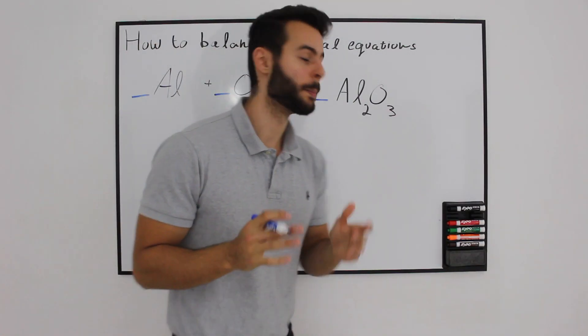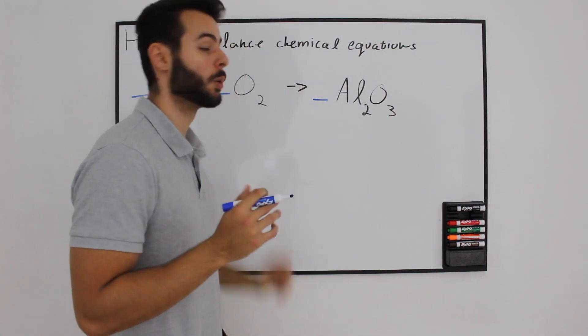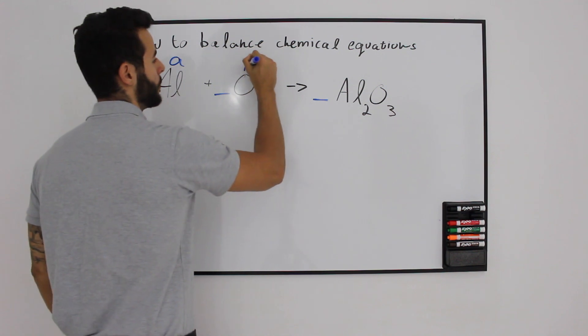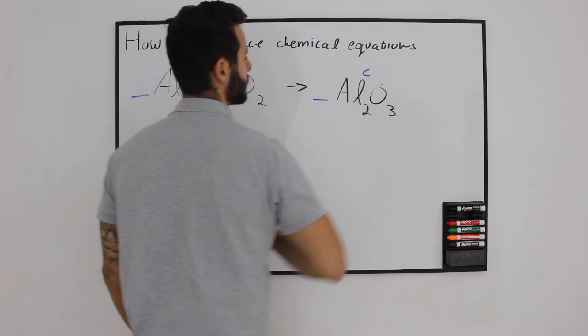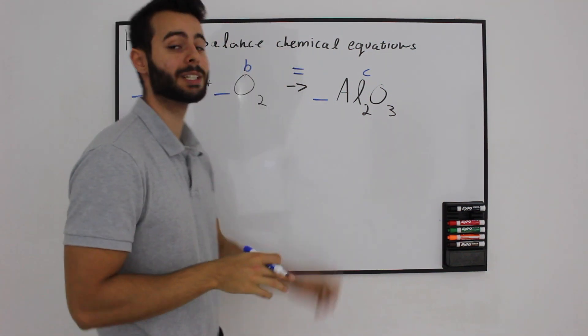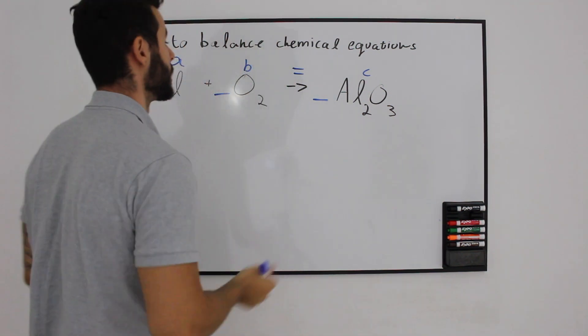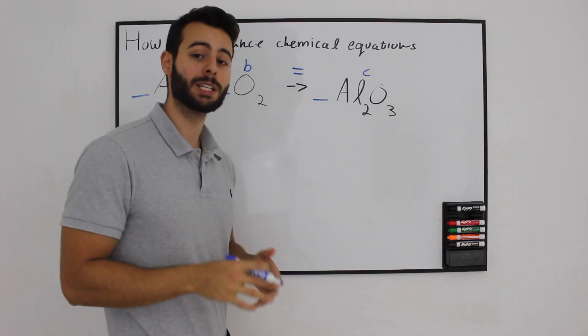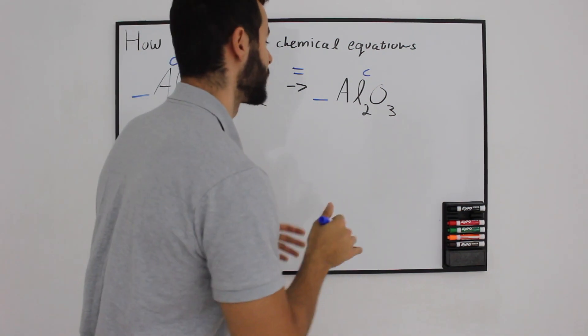Step 1 will be mentioning each species with its own letter. So let's do it. Step 2 will be to actually treat the equation like a regular mathematical equation. Let's put an equal sign on top of the arrow.